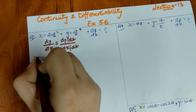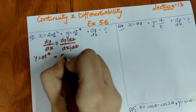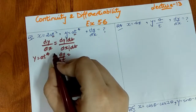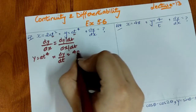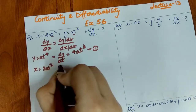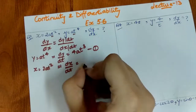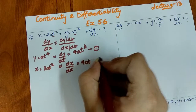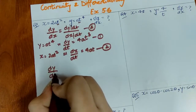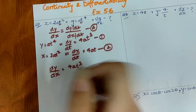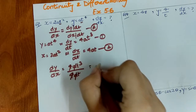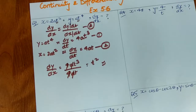Let's find dy/dt first. y is given as at⁴, so differentiating y with respect to t: using the power rule, 4 comes down, giving dy/dt = 4at³. Then dx/dt is found similarly. So dy/dx comes out to t².